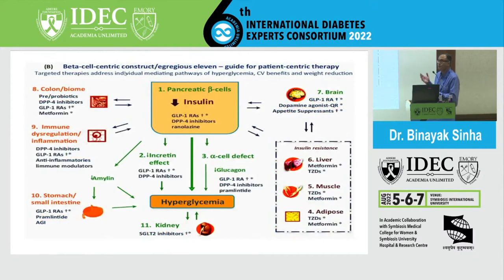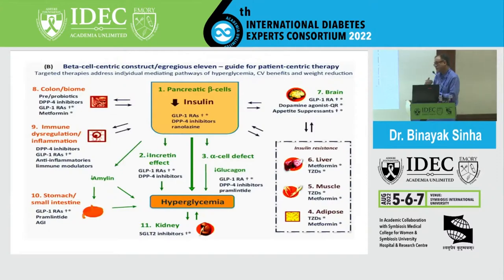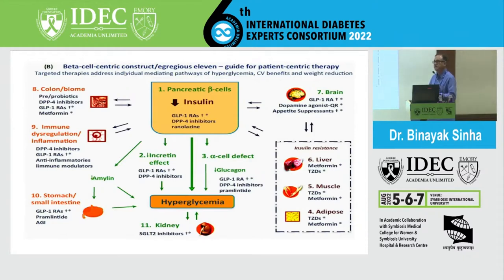Looking at the various parameters we can treat — beginning from pancreatic beta cell failure, to the incretin or alpha cell defect, to problems with the stomach, small intestine, immune dysregulation, and the colon — one thing that figures prominently is DPP-4 inhibitors. DPP-4 inhibitors actually influence the way the disease is modified. So DPP-4 inhibitors in general, and sitagliptin in particular, is a molecule which addresses the various pathophysiological defects of diabetes.